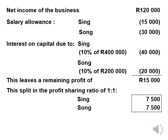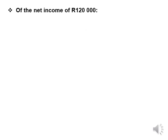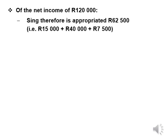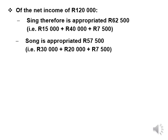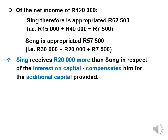Please note the profit-sharing ratio is not calculated on the net profit — it is calculated on the remaining profit. The remaining profit is the net profit minus the salary allowance to each partner minus the interest on capital to each partner. So out of the net income of $120,000, Sing will get $62,500: $15,000 as his salary, $40,000 as his interest on capital, plus $7,500 as his share of the remaining profit. Sing will receive $20,000 more than Song in respect of interest on capital, to compensate him for the additional capital provided.